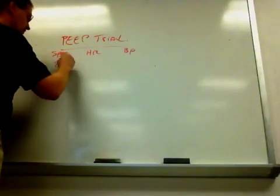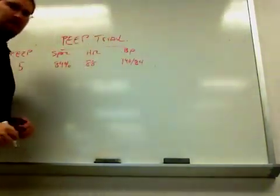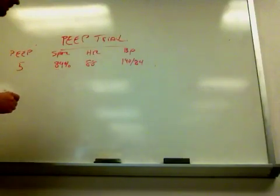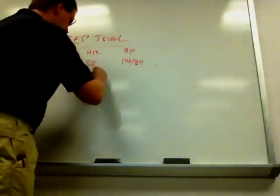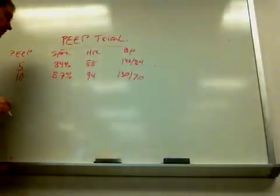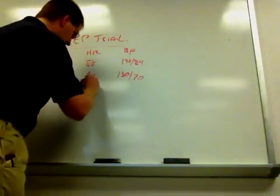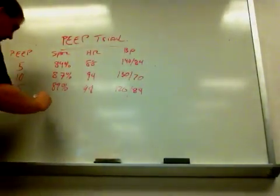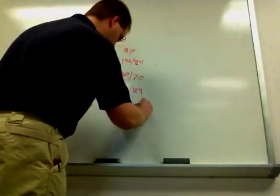And what I'm going to do is I'm going to start my patient on 5 of PEEP. And at 5 of PEEP, their saturation is 84%, their heart rate is 88, and we'll say their blood pressure is 140 over 84. So we notice that we do have an oxygenation issue, and we need to take care of this. So what I can do is, let's say I increase my PEEP to 10, and my saturation will increase to 87%. Maybe my heart rate is 94, maybe my blood pressure is 130 over 70. So then I go, and I increase it again to 15, gives me 89%, maybe my heart rate goes to 98, 120 over 84. And then I increase my PEEP to 20, and I'm at 95% on my sat, 115, and 80 over 44.